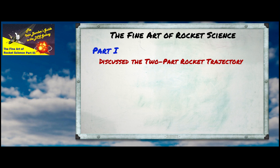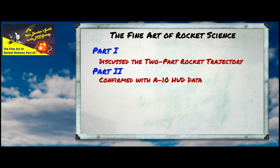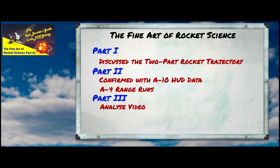We did some testing in part one with the A-10, and used the HUD tapes from that flight in part two to confirm the hypothesis that there really are two different regions of the sight depression curve. At the end of part two we went back out with the A-4 to acquire data on the trajectories of the FFAR 2.75-inch rocket and the Zuni 5-inch rocket. Today we're going to analyze that data — starting with the FFARs — build a sight depression table, and then fly a short mission attacking defended targets to see whether we can hit anything and survive.